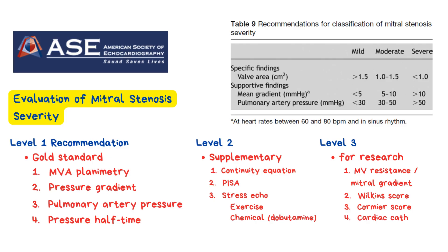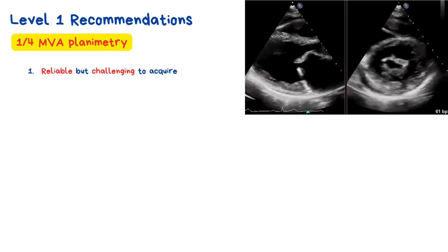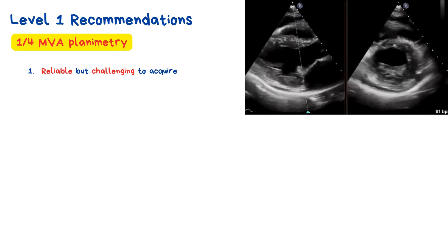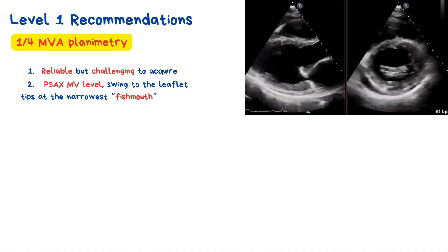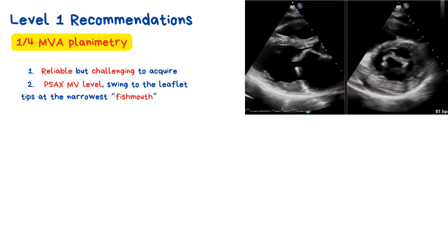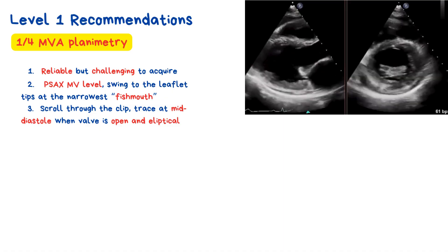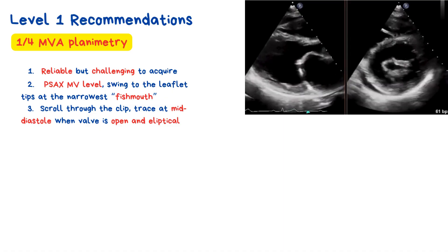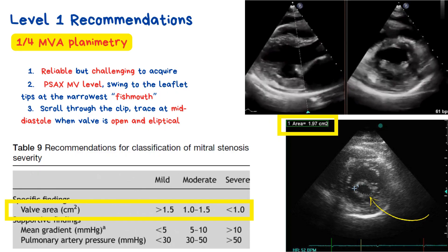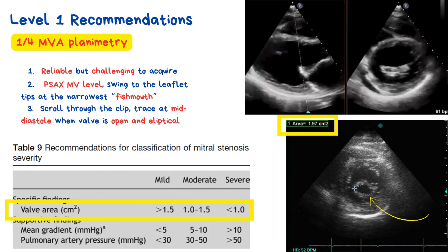Mitral valve area by planimetry is one of the most reliable methods, but also one of the most technically challenging. It requires good image quality, proper timing, and precise alignment at the leaflet tips. You'll want to be in the parasternal short axis view at the mitral valve level, tilting your transducer inferiorly to get the narrowest opening — that classic fish mouth appearance of the orifice. Scroll through your clip carefully and freeze it in mid-diastole when the valve is fully open; the orifice is typically elliptical. In this example, our tracing gave a mitral valve area of 1.97 cm², falling within the mild mitral stenosis range.